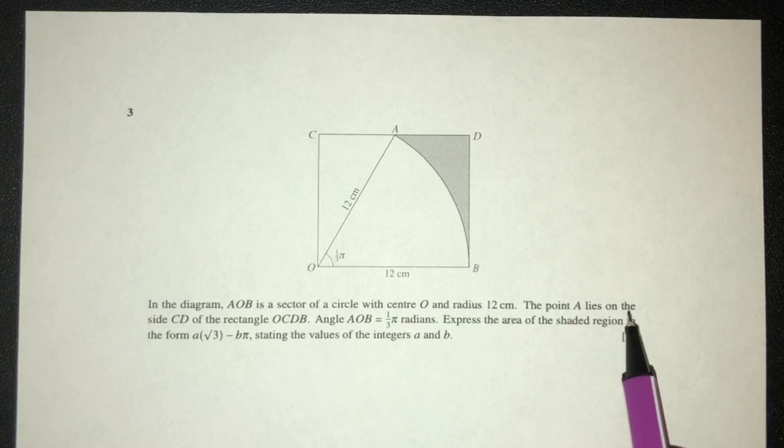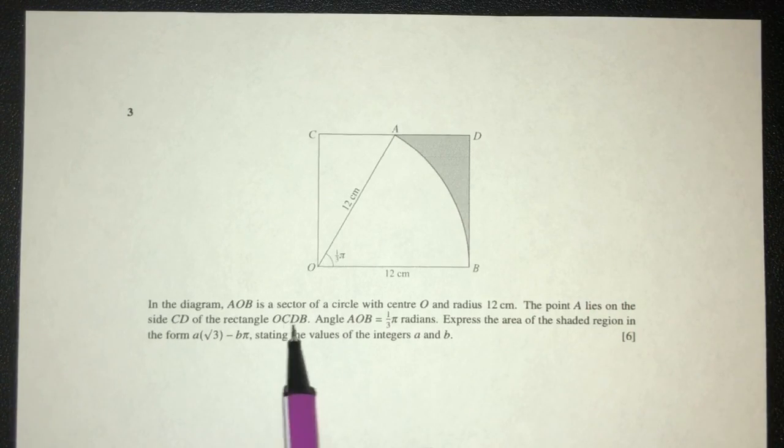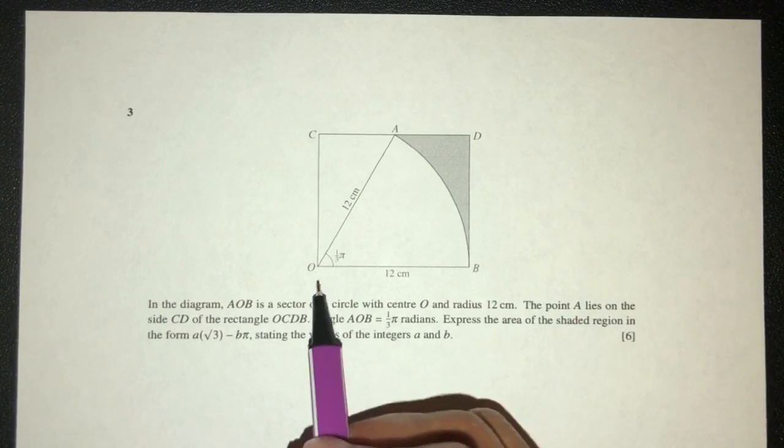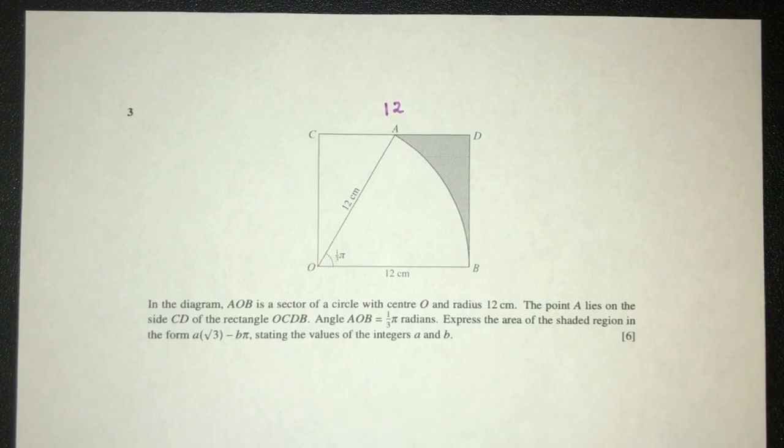Now, the point A lies on the side CD, right here, of the rectangle OCDB. This is a rectangle. So if this is 12, this also will be 12, the length of CD. It is a rectangle.